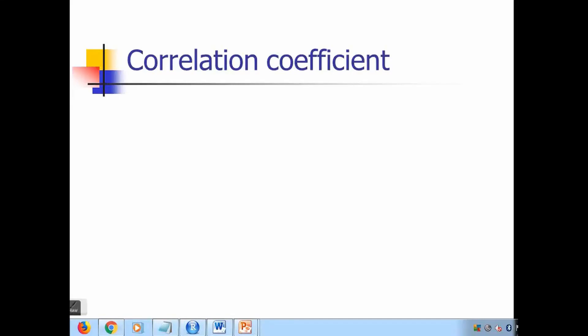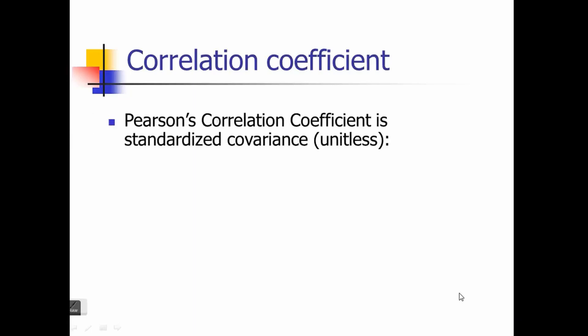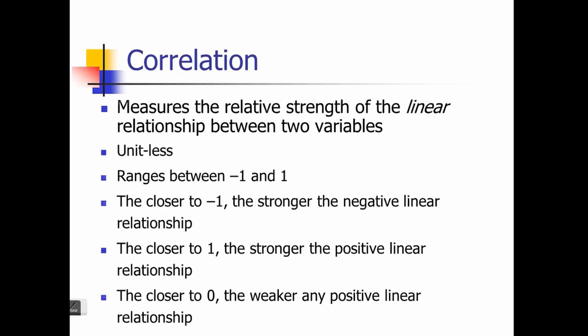In this video, we'll start with what is correlation and then move on to what is linear regression. Correlation is what we use to measure the strength of relations between two variables. The Pearson correlation coefficient is used as one of many statistics to understand the strength of the relationship. Correlation measures the strength of linear relationship.